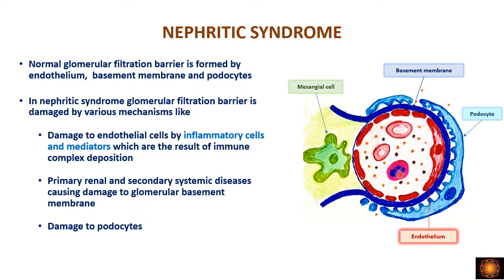These inflammatory cells come here because of immune complex deposition — this is important. The inflammatory cells enter the glomerular capillaries due to immune complex deposition, get activated, and cause damage to the endothelial cells. Similarly, there is damage to the basement membrane, which can be because of primary renal or secondary systemic diseases, and there will also be damage to the podocytes.